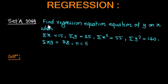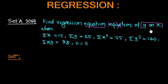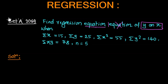The question is: find the regression equation of y on x. The given data is: summation x equal to 15, summation y equal to 25, summation x square equal to 55, summation y square equal to 140, summation xy equal to 78, and n is equal to 5.